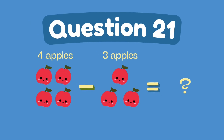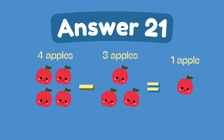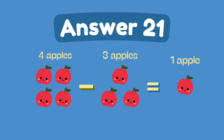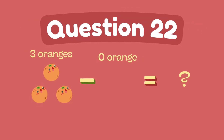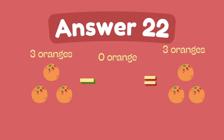What is 4 minus 3? The answer is 1. What is 3 minus 0? The answer is 3.